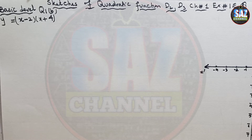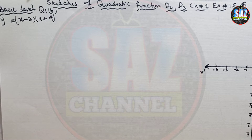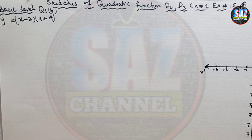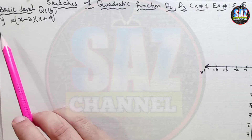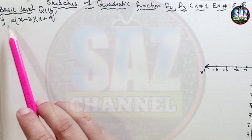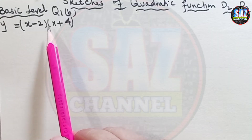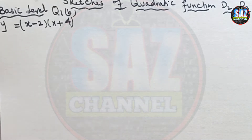In this lesson, we'll be discussing and learning how to sketch the graph of the quadratic equation, which is given in a factorized form by the Hit-and-Trial method. We'll be discussing part B of question number one: y equals x minus 2 into x plus 4.